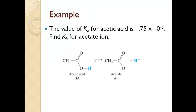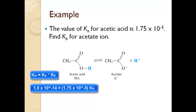As an example, let's find Kb if we know that the Ka for acetic acid is 1.75 × 10⁻⁵. Using the relationship Kw = Ka × Kb, we set 1.0 × 10⁻¹⁴ equal to Ka × Kb and solve for Kb by dividing: Kb = (1.0 × 10⁻¹⁴) / (1.75 × 10⁻⁵) = 5.7 × 10⁻¹⁰. That is the base hydrolysis constant for the acetate ion.